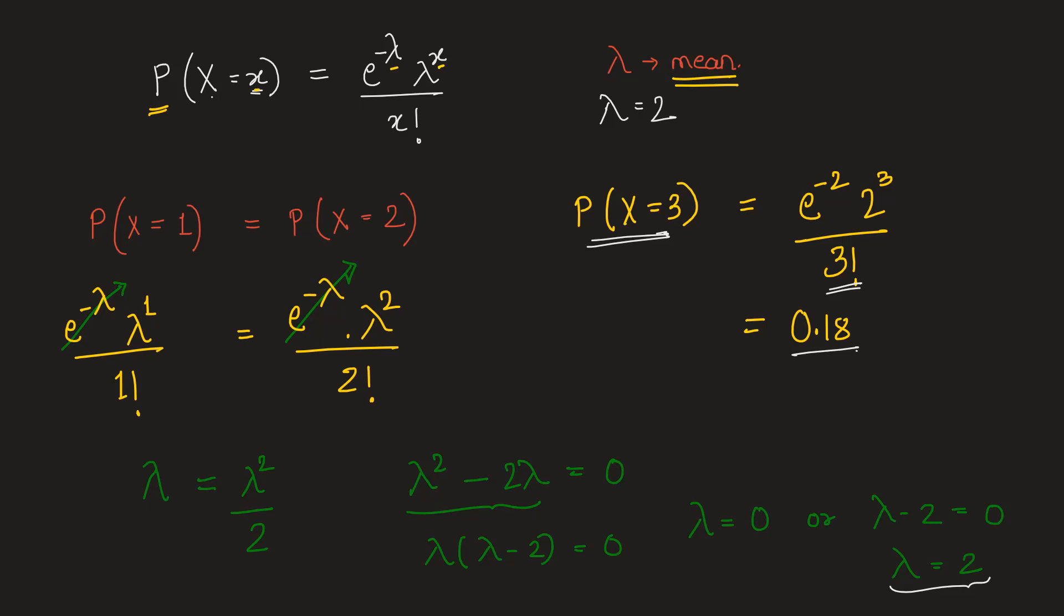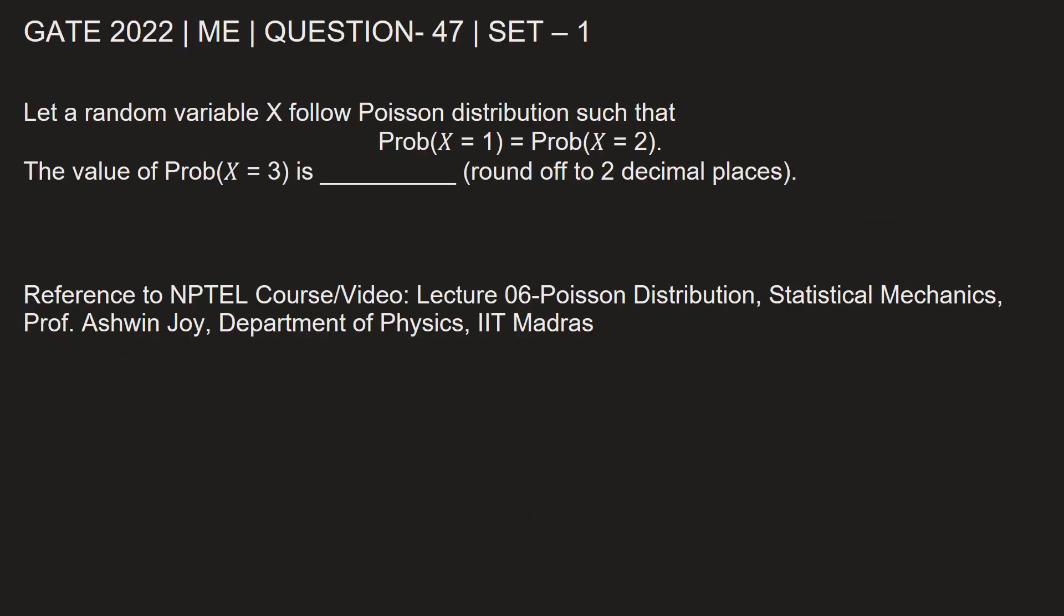Let's go back and fill in this answer. So the value of probability at x equal to 3 is 0.18. We have already rounded it off to two decimal places.